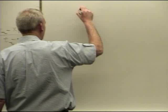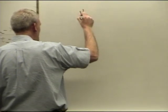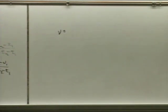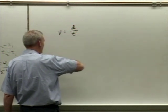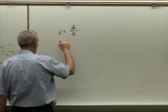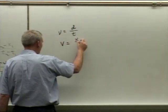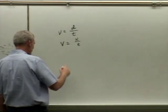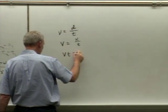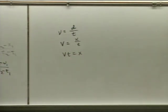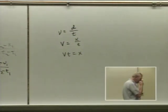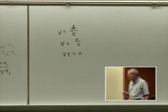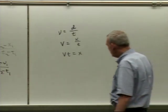Speed — using a lowercase v since it's not a vector — is distance divided by time. In physics we say speed equals x over t, and if you started at an initial position, then v·t = x. But what happens if your x is varying — in other words, there's an acceleration — so your speed is either faster or slower at the end of that time? Then you need something different.